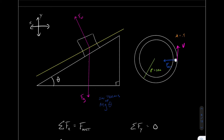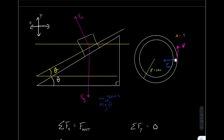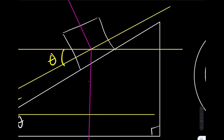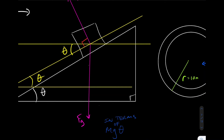First I draw this line, then the same triangle. This is the same triangle, which means this is the same angle. I can also draw a horizontal line that intersects that point. Now I have this line I just drew, which is parallel to this line here, and those lines are intersected by a transversal. Because they intersect in this particular way, we know what this angle is — it has to be theta.